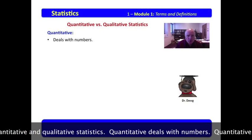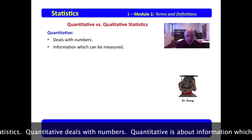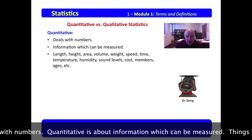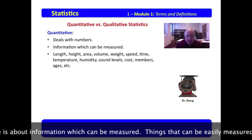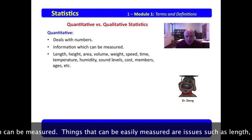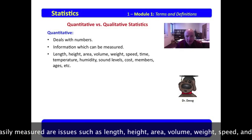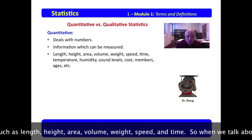Quantitative deals with numbers. Quantitative is about information which can be measured. And things which can be easily measured are issues such as length, height, area, volume, weight, speed.